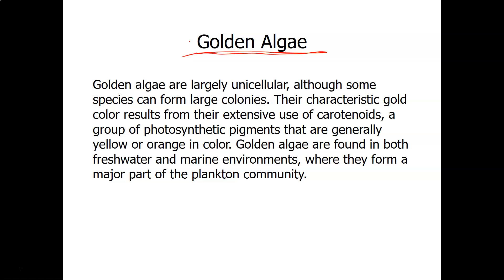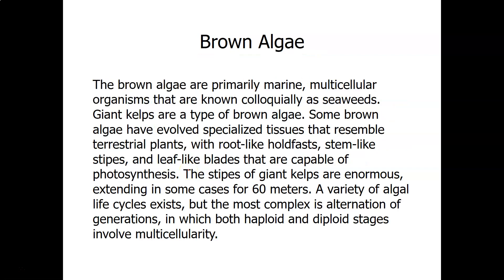Golden algae get their color from the pigment carotenoid — the same orange pigment found in carrots. They are found in freshwater and marine environments and are mostly unicellular, though they can form colonies. Golden algae are also part of the plankton community.